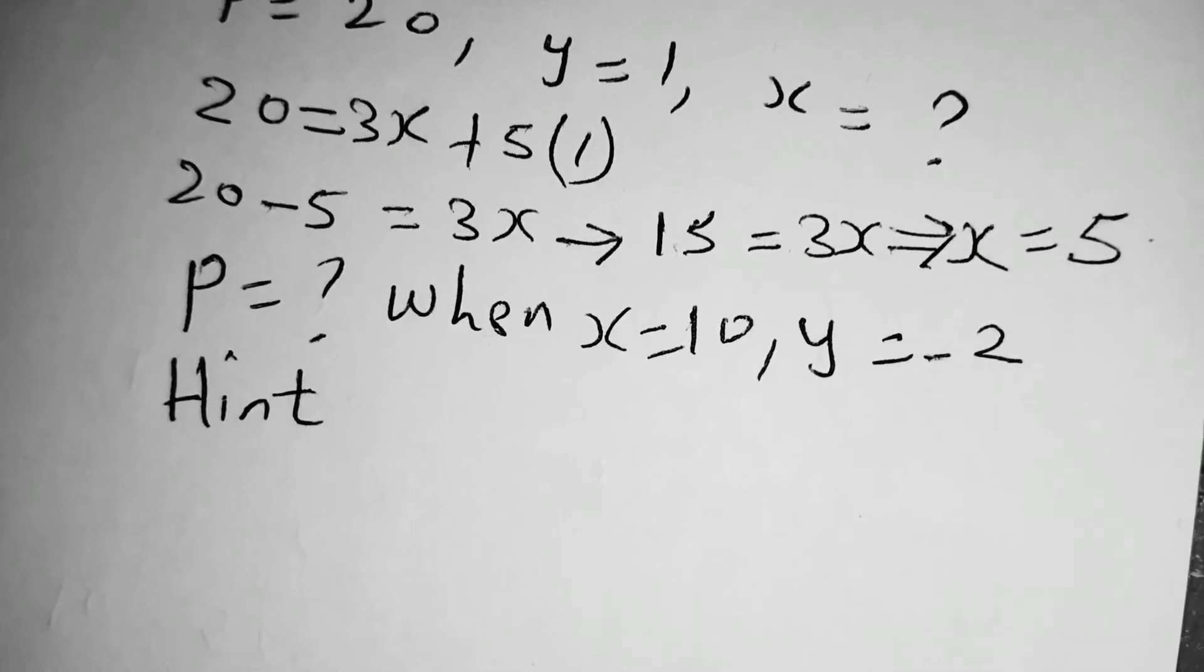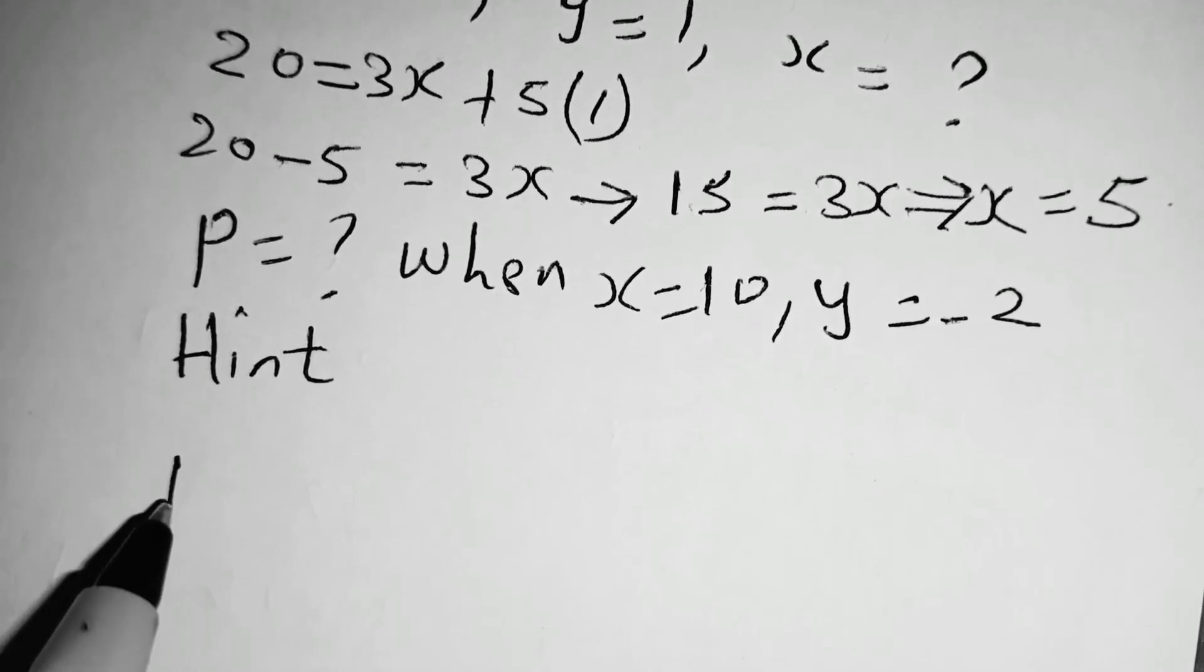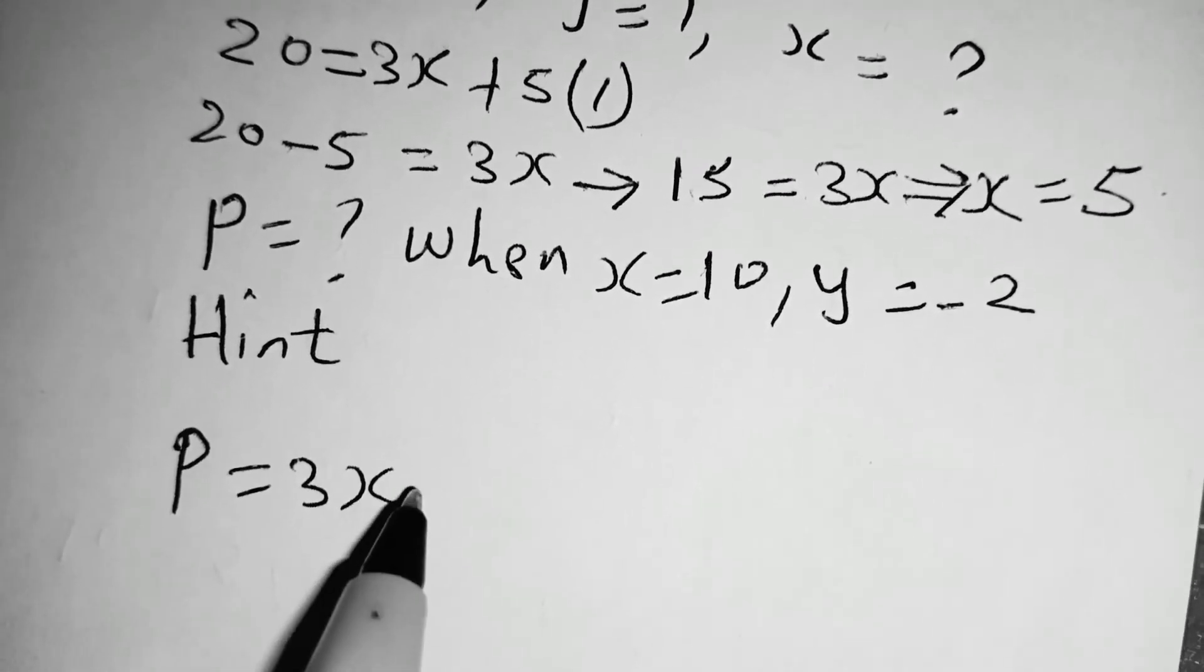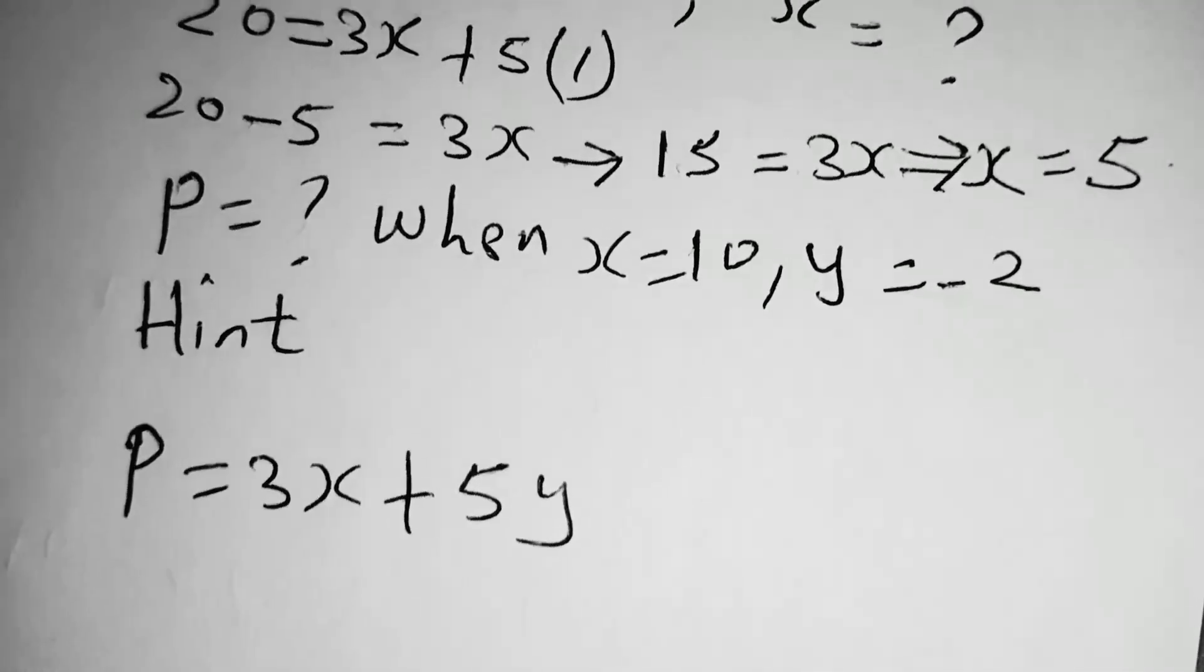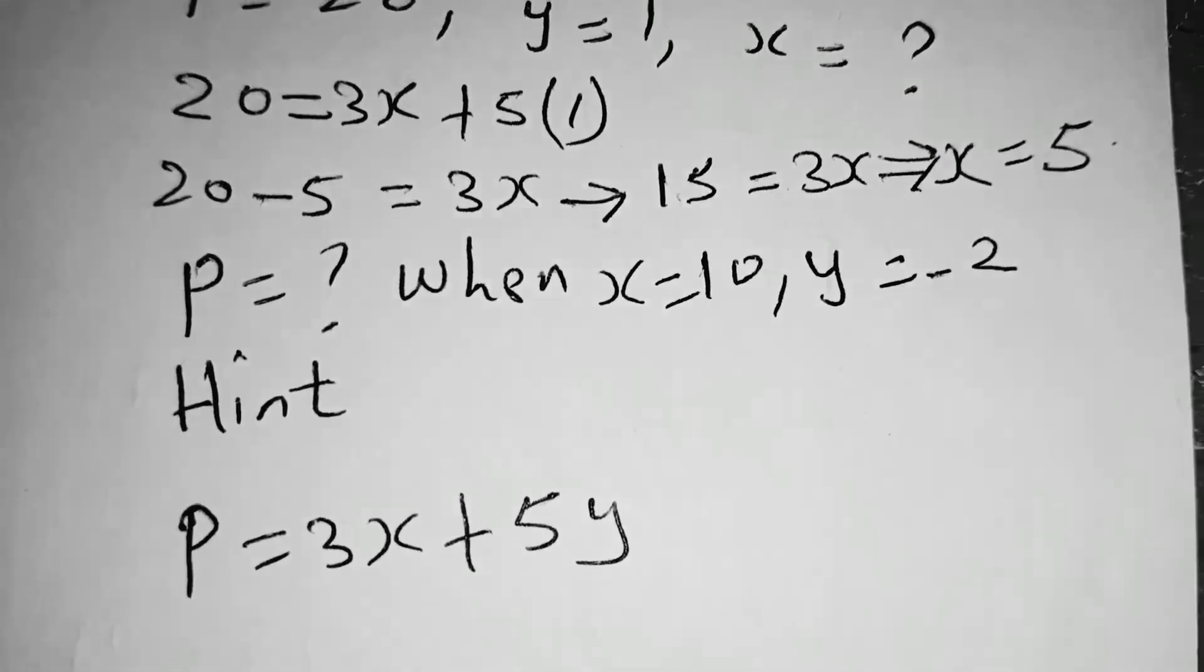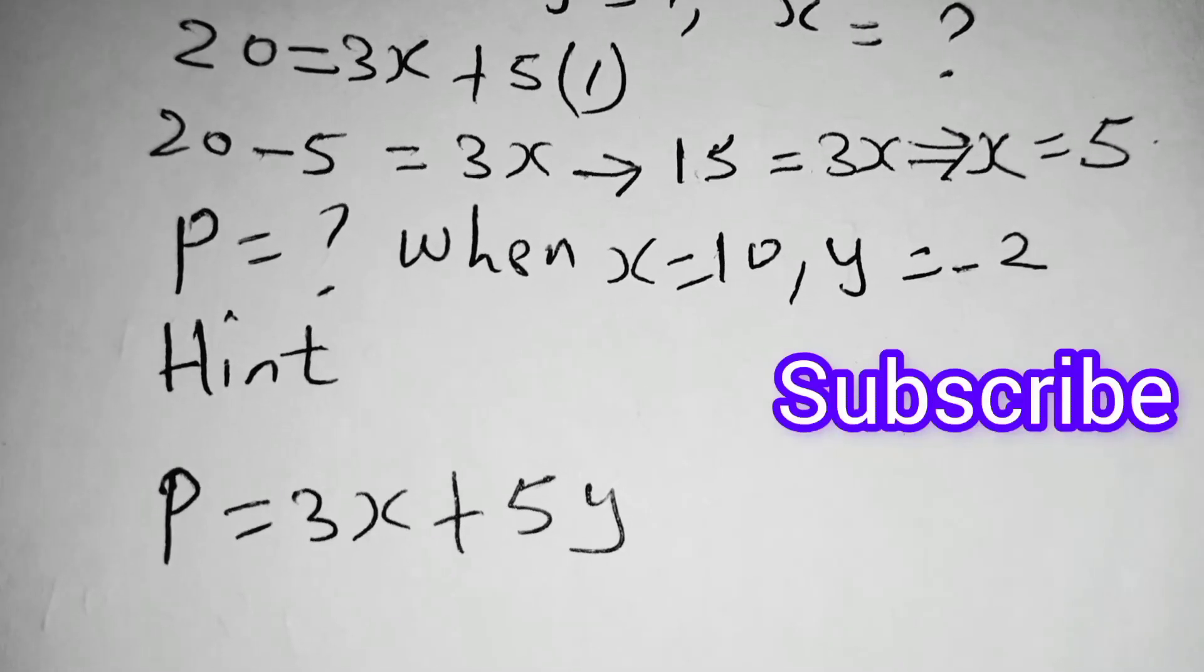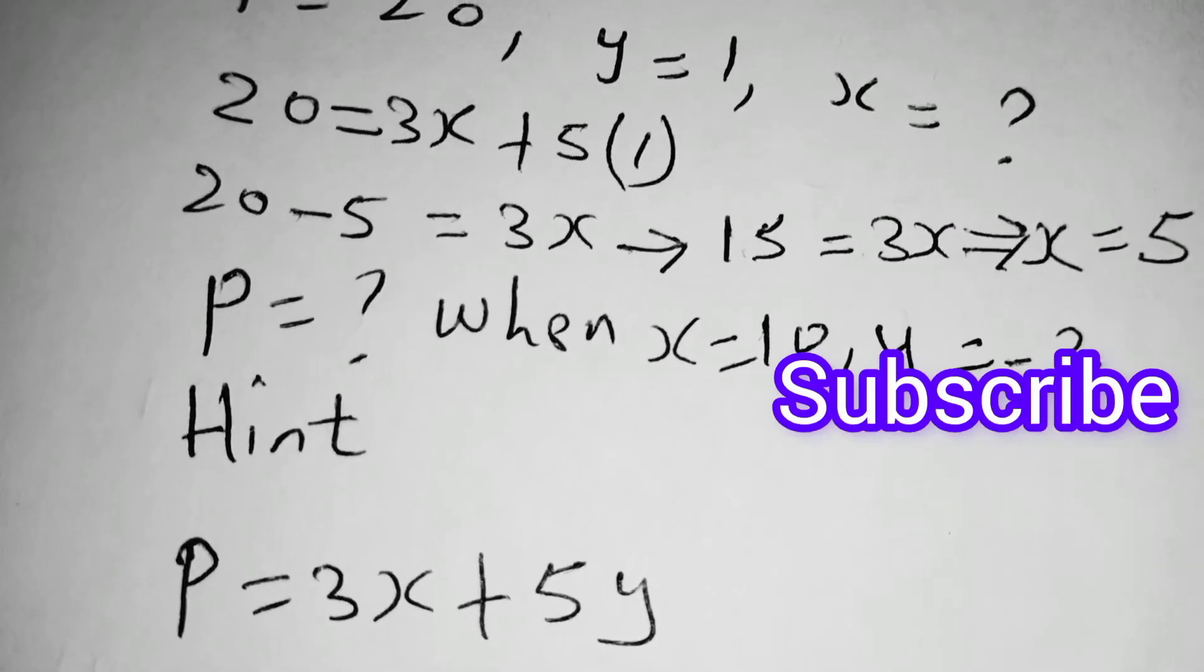You are going to use this formula: P is equal to 3X plus 5Y. So, kindly try that equation and let me know the response. Obtain the value of P when X is equal to 10, Y is equal to negative 2. Do that and let me know the answer so that we may learn together.